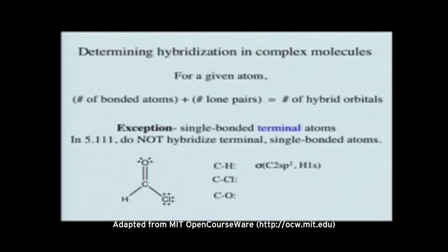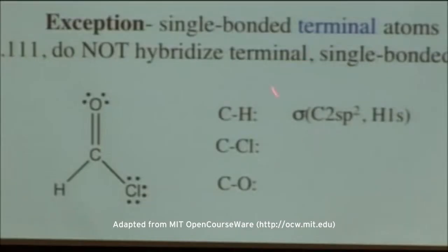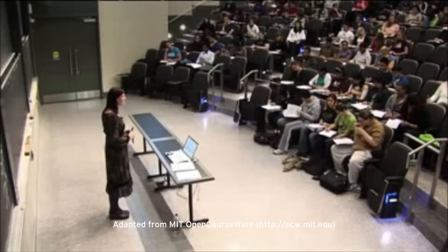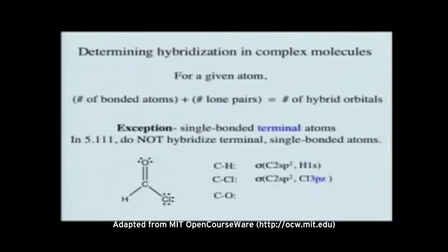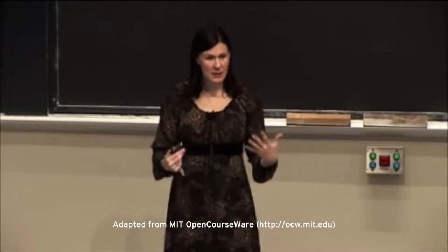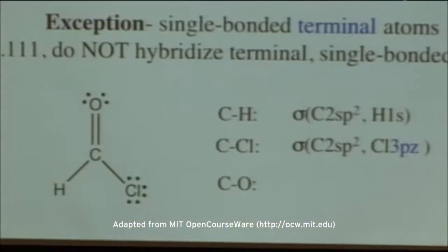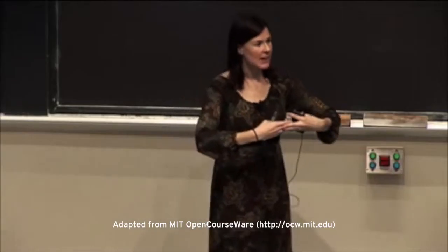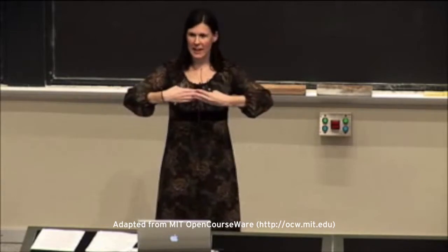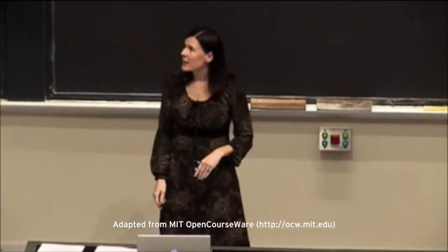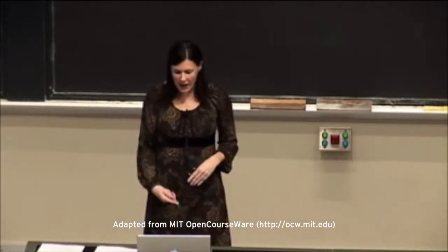Now let's look at the carbon-chlorine bond. Carbon is still 2sp2 — it's the same carbon atom — and it's a sigma bond because it's a single bond. The chlorine is not hybridized, so it uses an atomic p orbital. Specifically, it's chlorine 3pz, because the z-axis is our bonding axis — our internuclear axis. Any p orbital involved in a sigma bond has to be the pz, as that's the only one with the right orientation to overlap along the z-axis. So: carbon 2sp2 with chlorine 3pz.